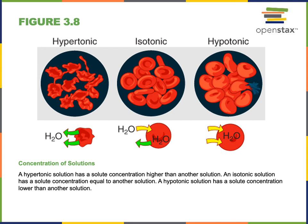Isotonic solutions contain an equal concentration of solutes as is found in the cytosol of the cell. Therefore, if we place a cell into an isotonic solution, it will have no effect on the volume of the cell. There may be a small amount of osmosis carrying water into the cell, equally balanced by osmosis carrying water out of the cell, so there is no net movement of water into or out of the cell.